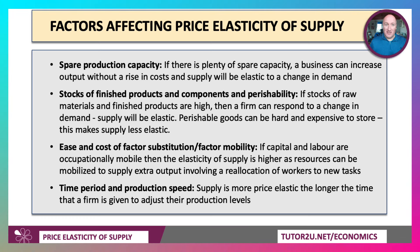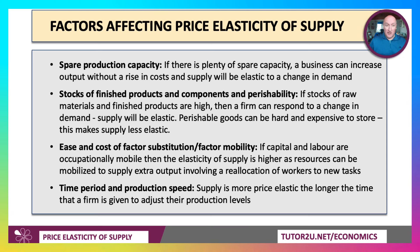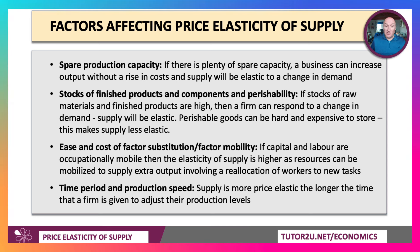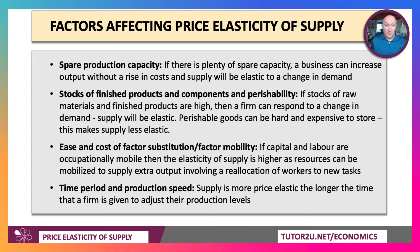Here are some of the key factors affecting price elasticity of supply. The most important is probably spare capacity. If businesses have plenty of excess capacity — unused machinery, spare labour — then a business can increase output without rising costs, and supply will tend to be price elastic. Stocks of finished products, components, and perishability also matter. If stocks are high, a firm can quite easily meet demand by reducing stocks and offloading them onto the market — supply will tend to be fairly elastic. Perishable goods, on the other hand, can be hard and expensive to store, particularly if you have to keep them refrigerated, which typically makes supply less elastic.